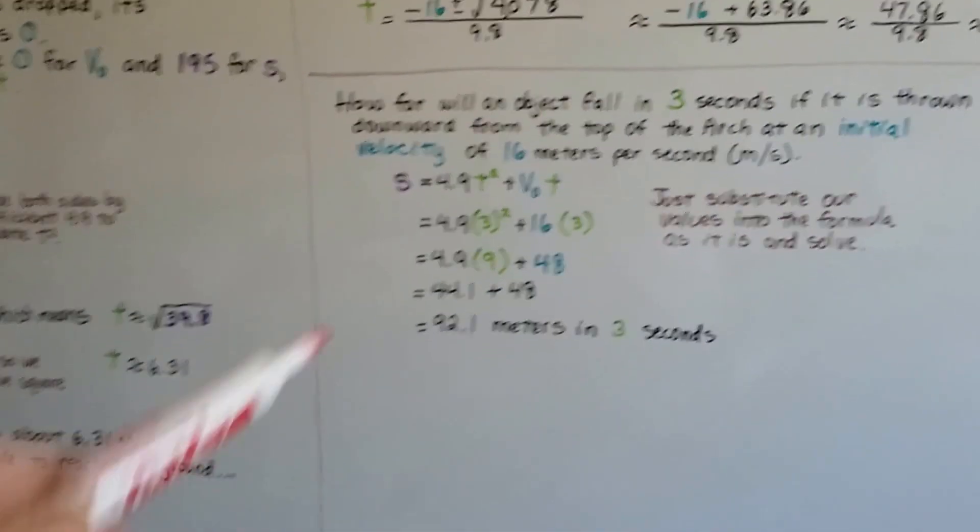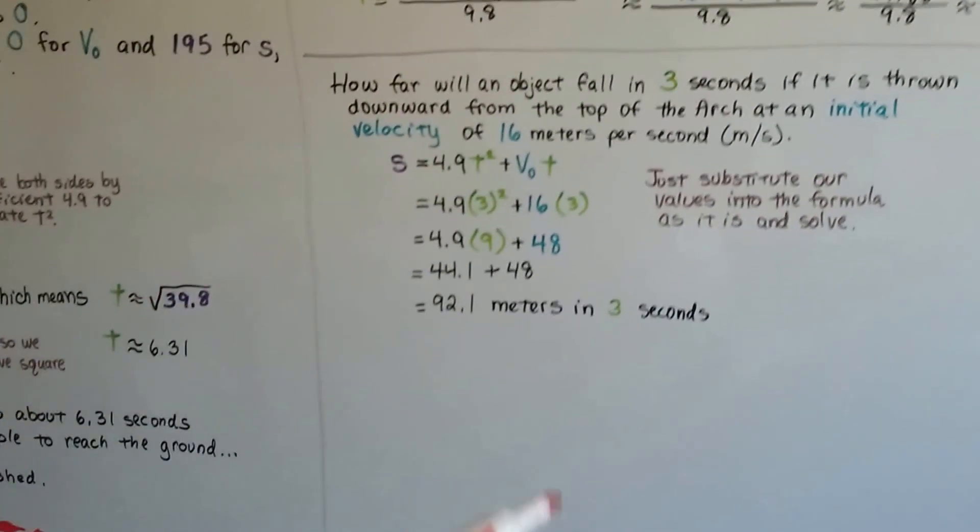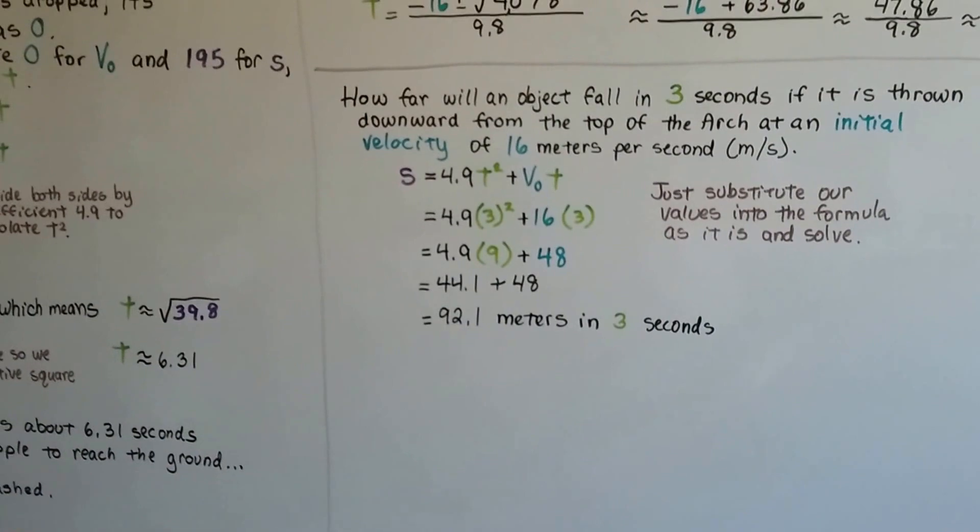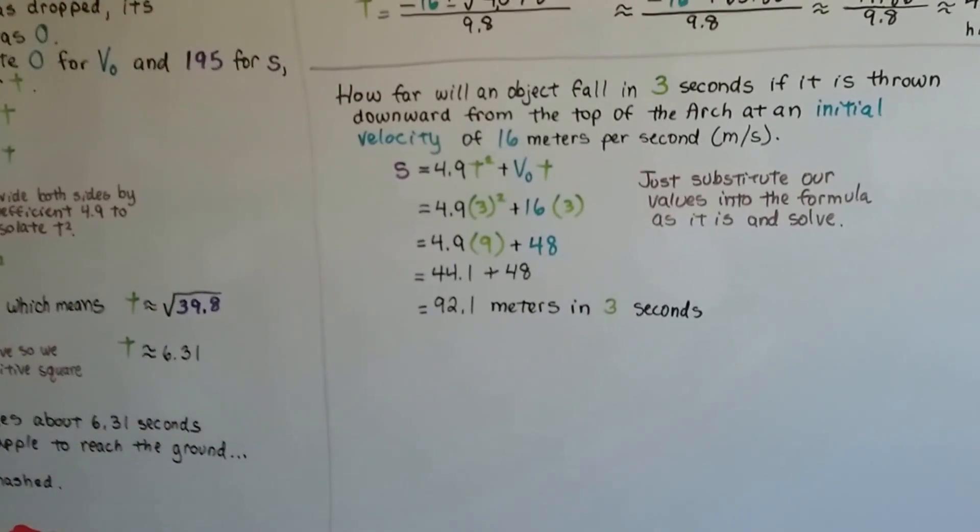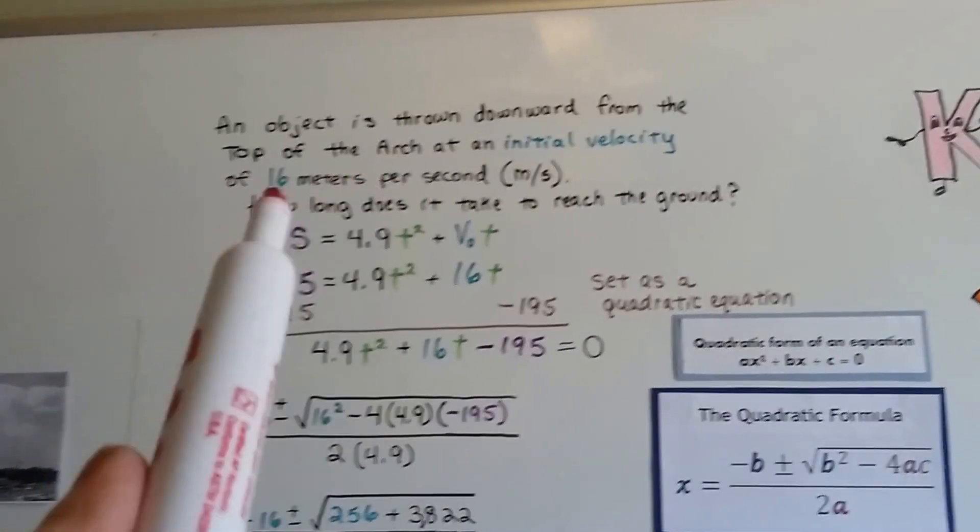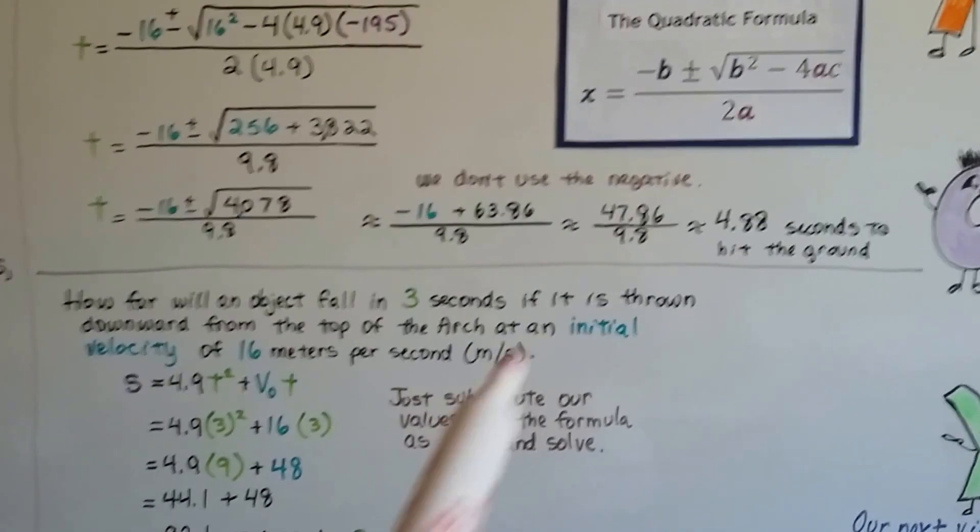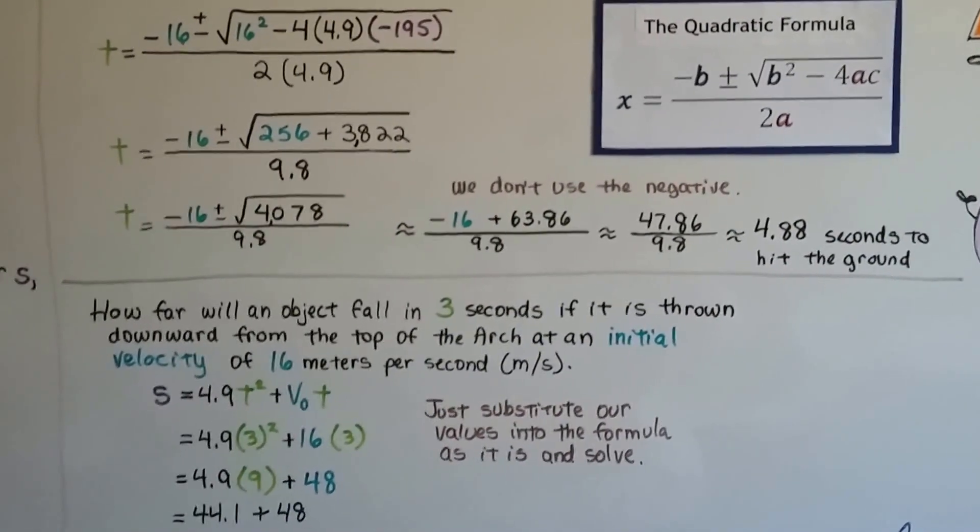So the apple was 6.31 seconds, and it was just released, just dropped. There was no force on it dropping from us. It was just let go and it was gravity bringing it down. Now that it was being pushed at 16 meters per second, it went a little bit faster and hit the ground in 4.88 seconds.